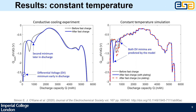The conductive cooling experiment was simulated by just having a constant temperature throughout the simulation. As you can see on the right, both dV minima are predicted by the model, whereas if you turn the plating off — which is the red dashed line — you get the same results as before the fast charge, which is really encouraging.